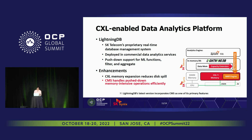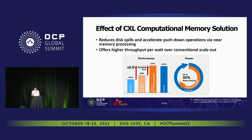LightningDB's latest version incorporates the computational memory solution as one of its primary features that can be turned on and off based on your needs. To demonstrate the effect of the CXL computational memory solution, we set up an experiment with four configurations: one server alone, one server with one CMS card, one server with four CMS cards, and two servers forming the target cluster with CPUs and DIMMs only and no CMS cards. One server with four CMS cards shows comparable performance to the two-server configuration.